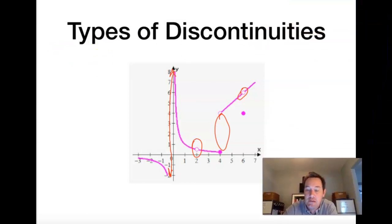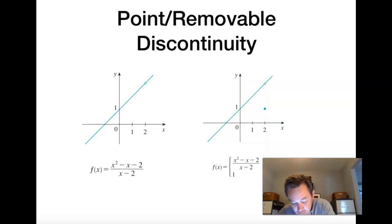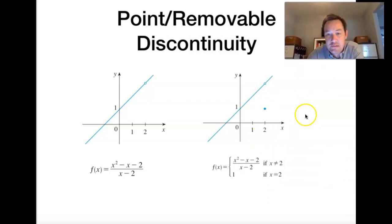So let's start with your point or removable discontinuity. So this is when you have a hole in your graph, and it's either just a straight-up hole, or sometimes like in the second one, it's a hole where the graph is then defined at a different point somewhere else. But we call this either point discontinuity or removable discontinuity. And the reason it's called a point discontinuity or removable discontinuity is because it's very easy to remove it if we'd like to.